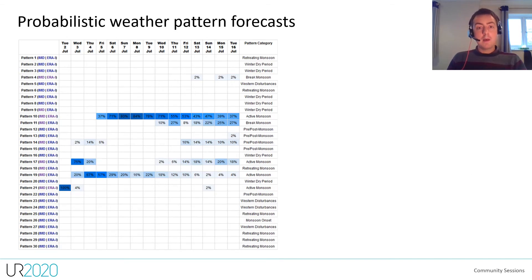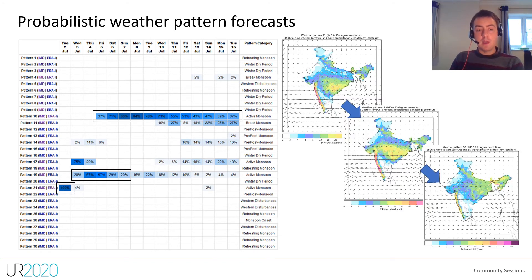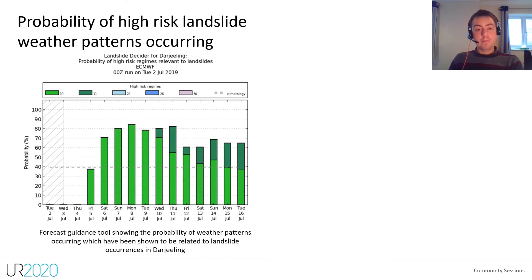We can then combine this information with probabilistic weather pattern forecasts which are driven by ensemble prediction systems. Here we can see three transitions highlighted in the forecast — these are the transitions with the highest probability.